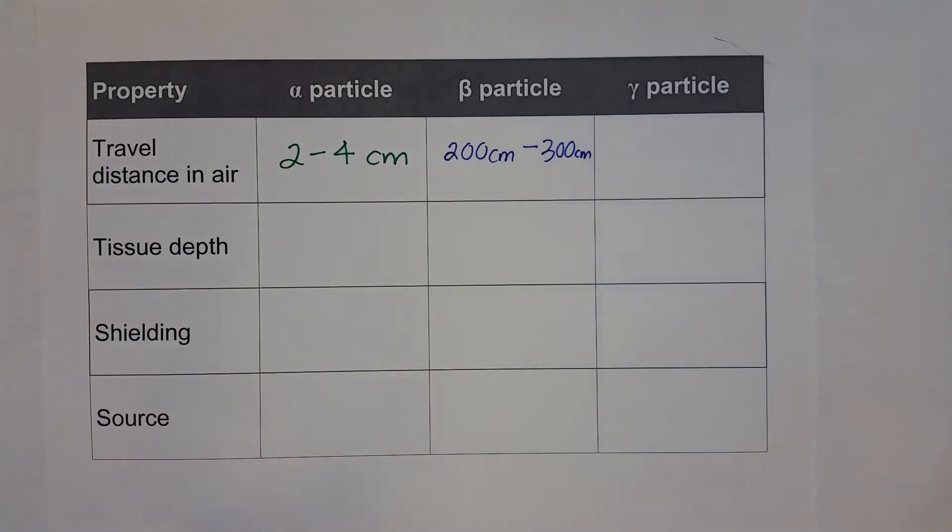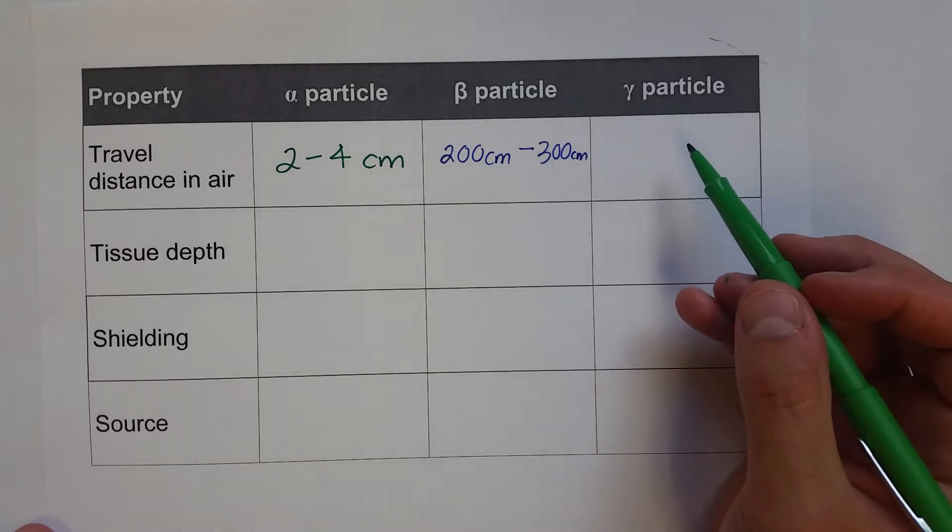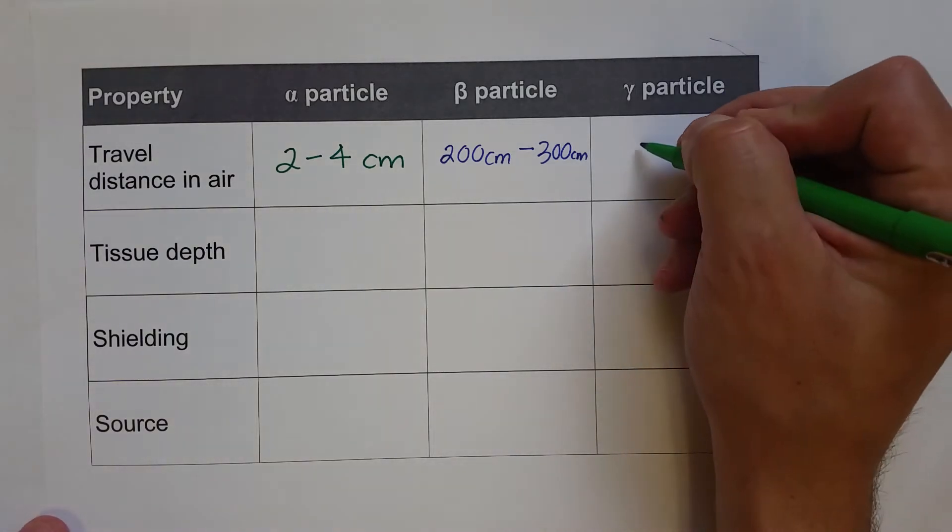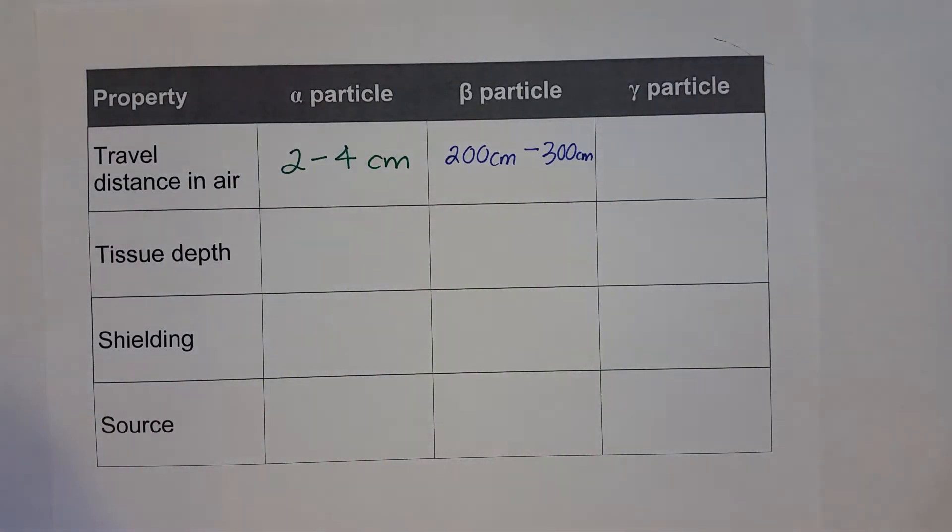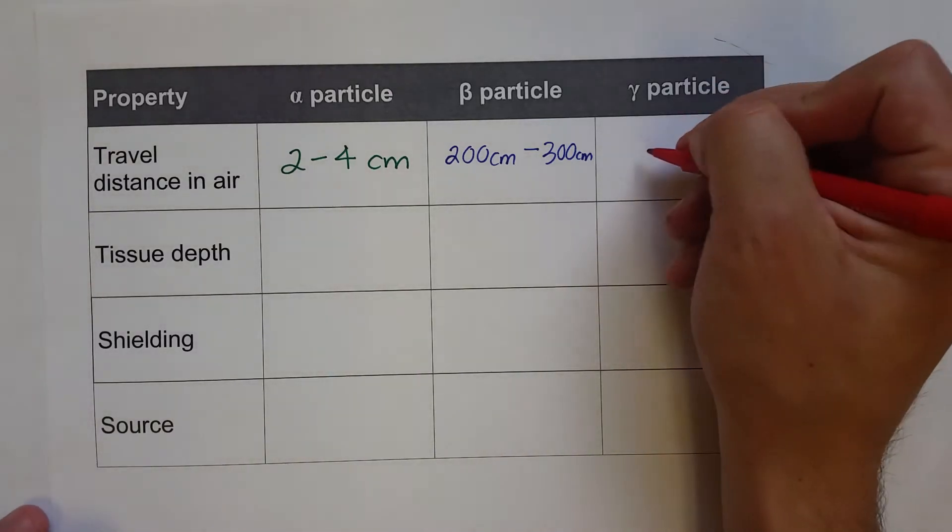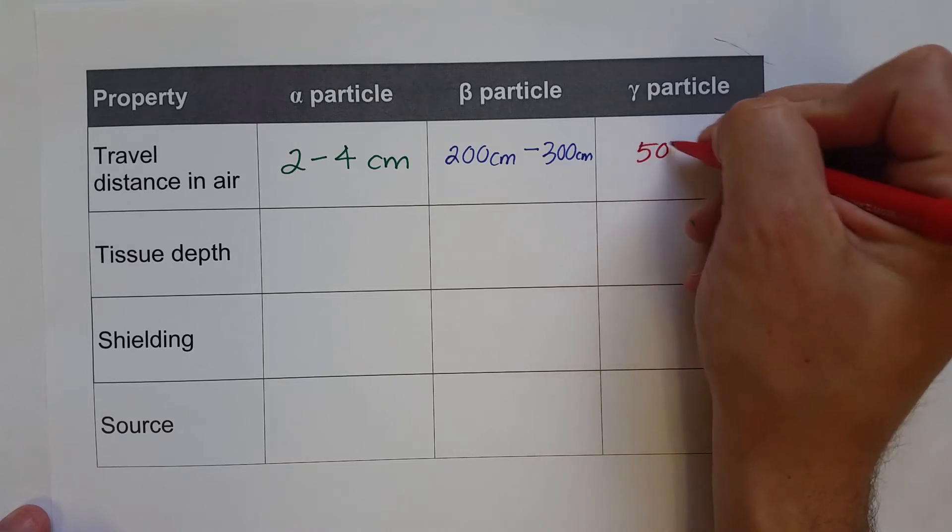The gamma ray, really gamma particle, really just electromagnetic radiation, can travel the farthest, up to 500 meters in the air, so quite a large distance, half a kilometer.